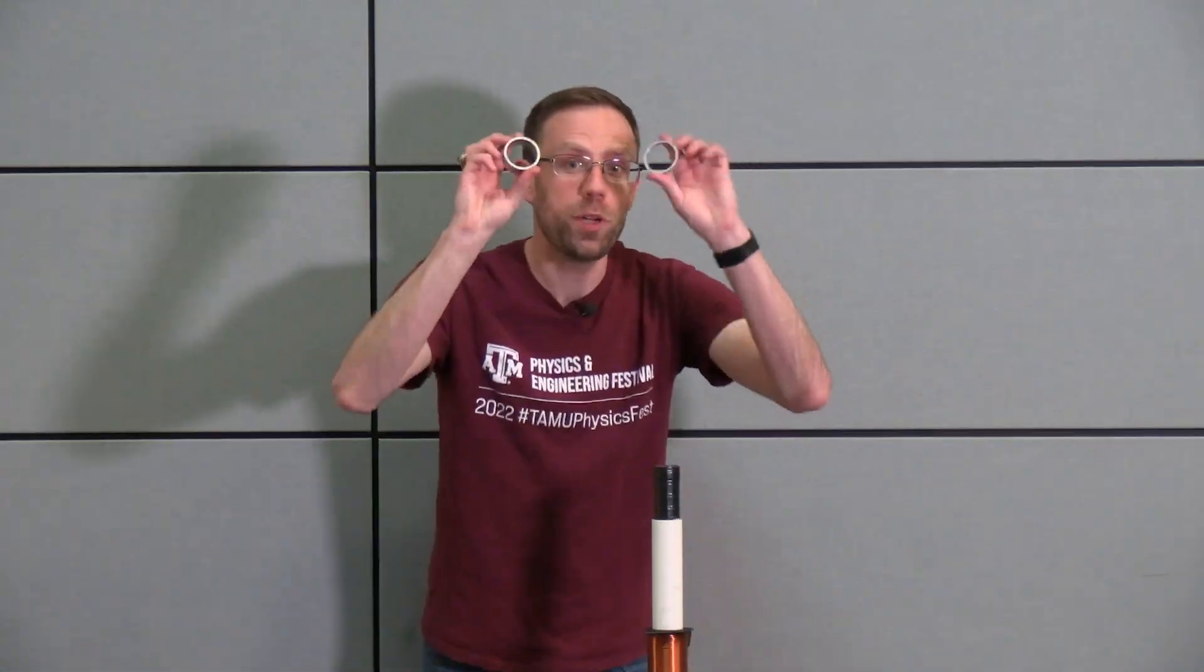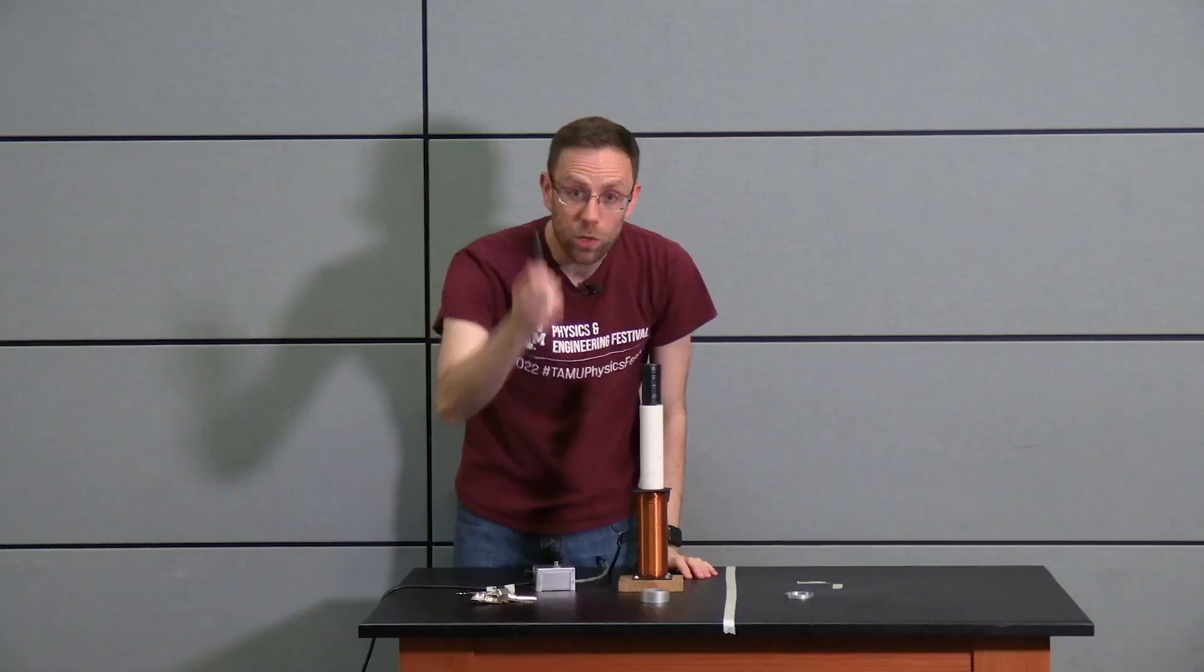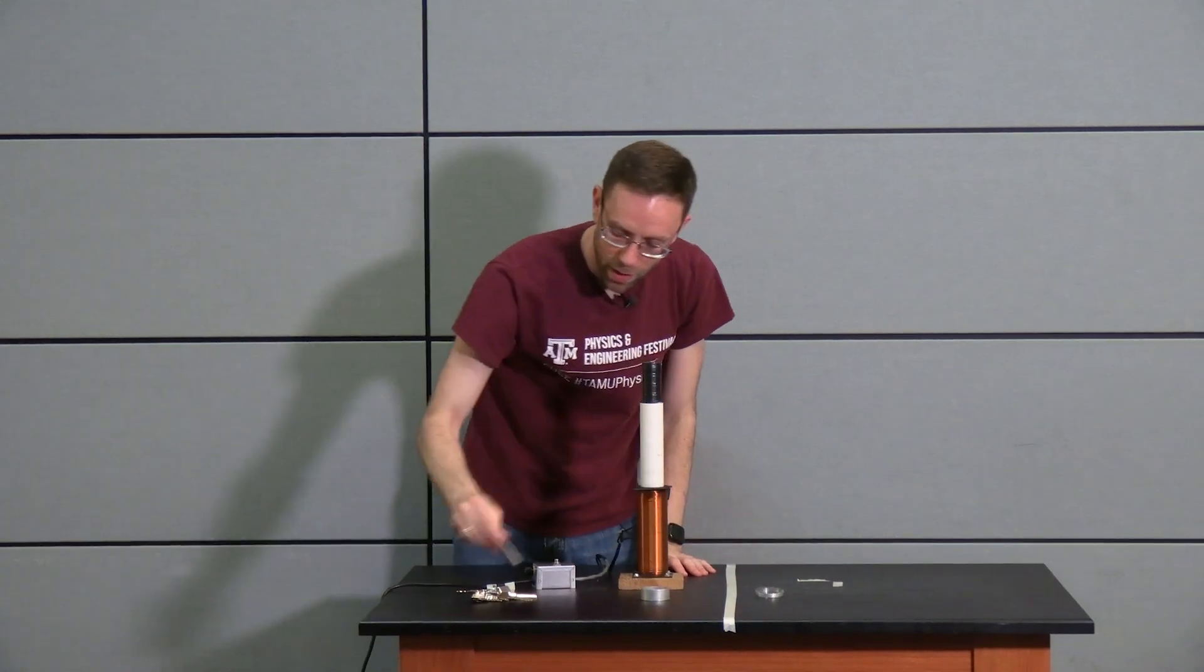Today we're going to make a ring jump. We have two different rings here. Both are made of aluminum. Aluminum is not magnetic, as you can see.